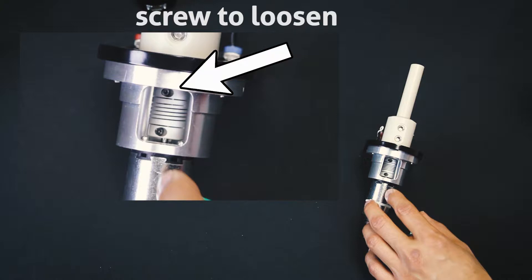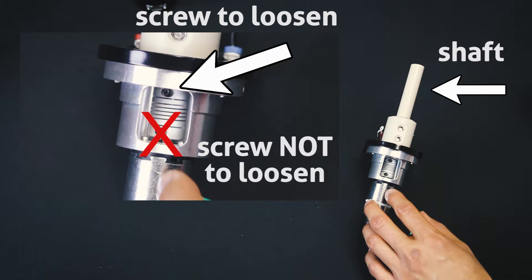Loosen the hex screw that is closer to the shaft using the 1-16th of an inch hex driver. Do not touch the hex screw that is closer to the motor wire assembly.